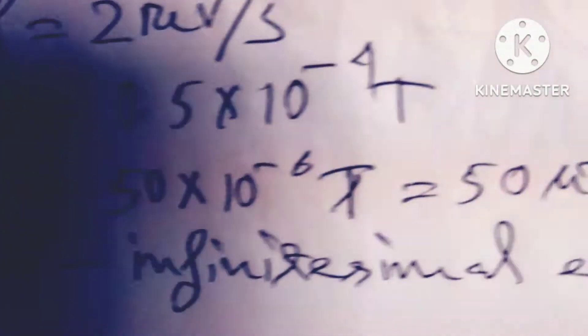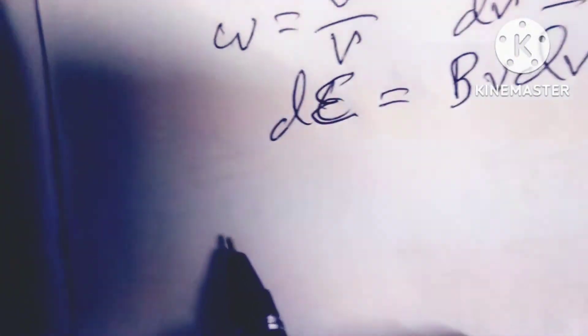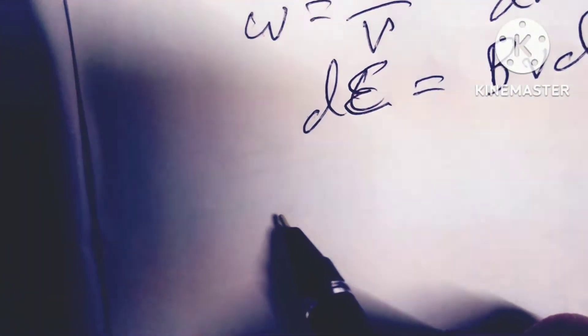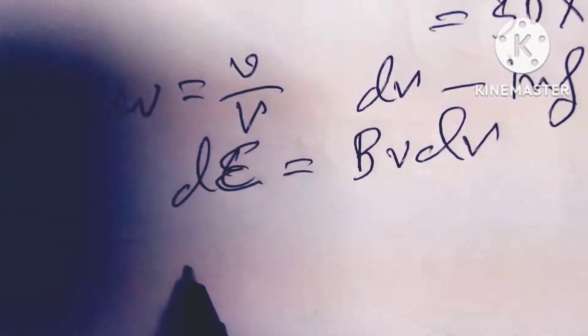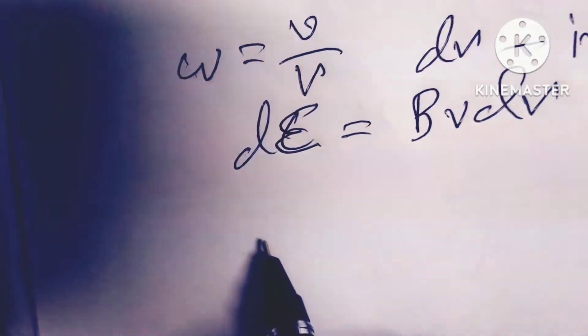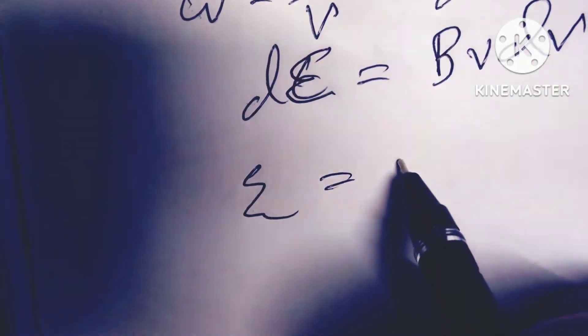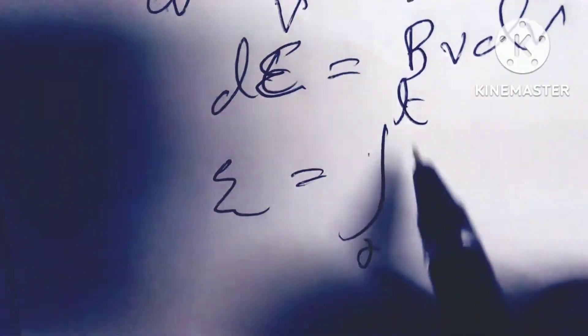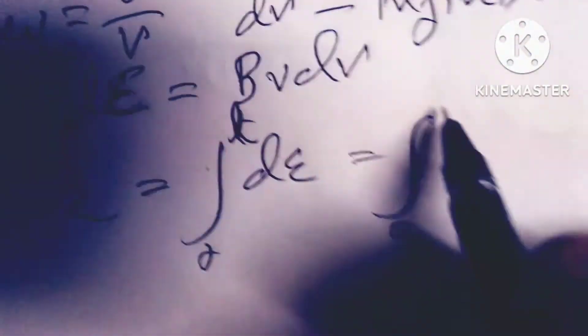The EMF induced due to the motion of this element is given by epsilon equals B V dr. So the total EMF between the blade tip and the center hub is found by integration of the expression over the whole.